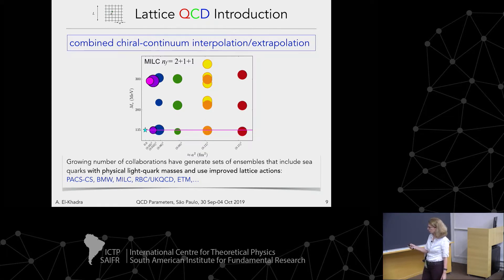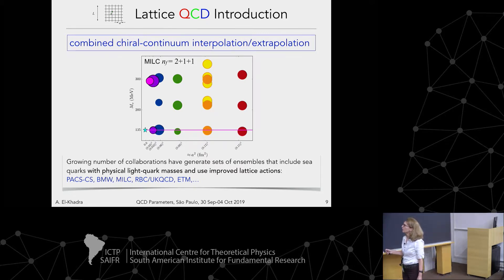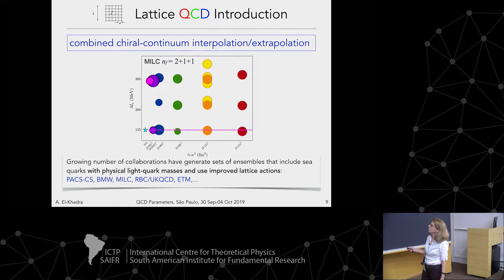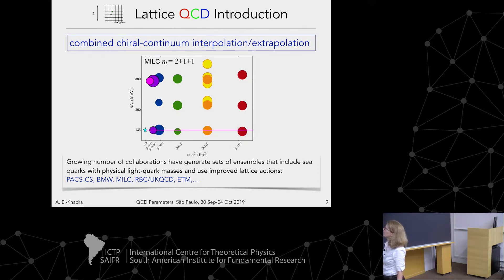For the chiral-continuum fits, the two relevant parameters are the pion mass of the staggered pions and the lattice spacing. A serious simulation would try to cover this space. We use ensembles with five lattice spacings, some at the physical point where the Goldstone staggered pions have approximately physical mass. Fermilab-MILC is by no means alone — a growing number of collaborations have physical-mass ensembles, so the need to extrapolate is quickly going away.